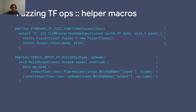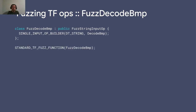To further simplify writing fuzzers in TensorFlow, we have two macros. One is STANDARD_TF_FUZZ_FUNCTION, which writes the LLVMFuzzerTestOneInput, creates a class, and calls the fuzz method. The second is SINGLE_INPUT_OP_BUILDER, which builds a computation graph with one input and one output. With all these helpers, the simplest fuzzer we can write is for DecodeBMP, which takes a BMP image as input and fuzzes it using the DecodeBMP kernel operation in TensorFlow.